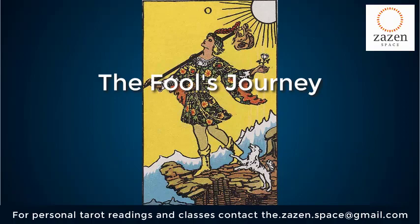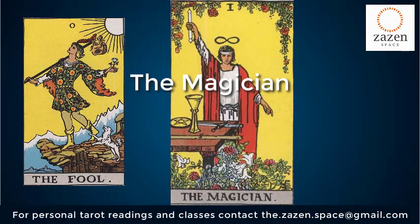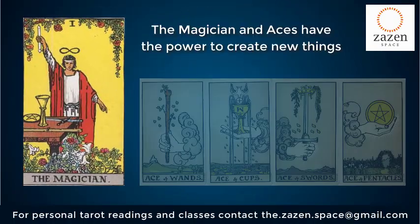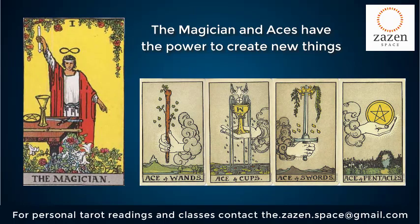When our fool began his journey he came across the first major arcana card, namely the Magician. Our Magician is responsible for the development of the Aces. The Magician, along with the Aces, has the power to start off anything in any realm of our life — namely the four areas: the area of emotion, thoughts and words and ideas, the area of work, and the area of material progress. We see the four tools and four symbols of the four elements on the table of our Magician.